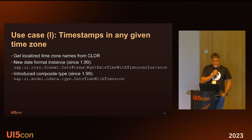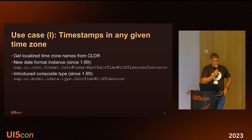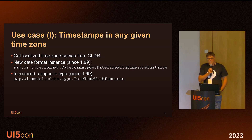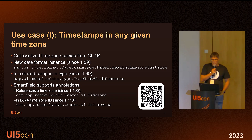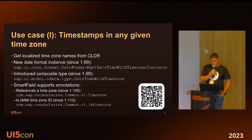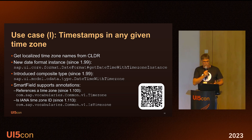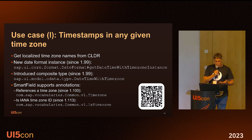To use this formatter also in data bindings, we introduced the DateTimeWithTimezone type. This is a composite type which expects as the first part the timestamp — the JavaScript Date or in OData v4 the corresponding string — and the second part is the time zone ID. Later on, the smart field added two annotations: Common.TimeZone and Common.IsTimeZone. With Common.IsTimeZone I can mark a property that contains the IANA time zone ID, and with the TimeZone annotation I can combine a timestamp with the corresponding time zone ID by referencing the property containing it.